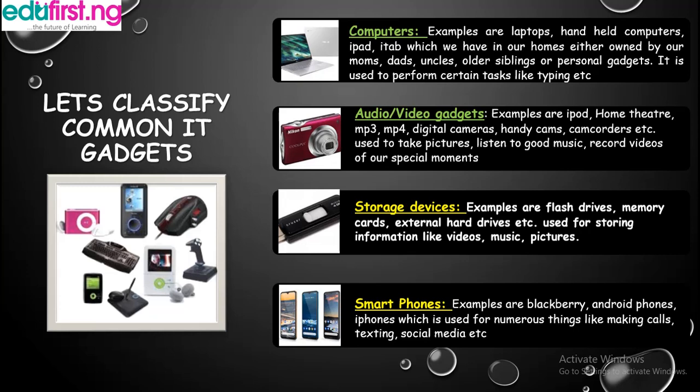Audio or video gadgets — examples are iPod, home theater, MP3, MP4 players, digital cameras, handy cams, camcorders, etc. These are used to take pictures, listen to music, and record videos of our special moments. Storage devices — examples are flash drives, memory cards, and external hard drives, used for storing information like videos, music, and pictures.